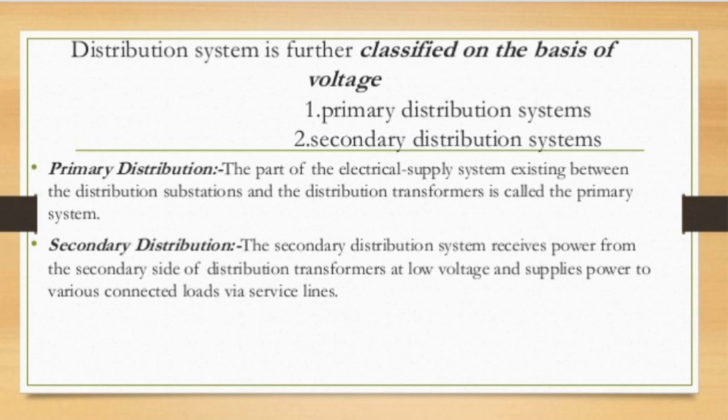The normal voltage levels for secondary distribution systems are 440 volts for three-phase supply and 230 volts single-phase with one neutral. For small-scale industries, a three-phase supply system is provided, which also comes under the secondary distribution system.